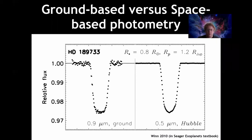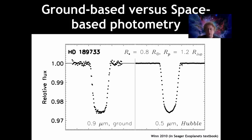If you observe a transit from space, you can get much nicer data. On the left plot, I'm showing the brightness of a star with a planet orbiting it, with data taken from the ground with a telescope in Arizona — you can clearly see the dip in brightness. But if you compare it to what you can get with the Hubble Space Telescope in space, there's basically no noise in the data set. This means we can find smaller dips in brightness, and therefore smaller and smaller planets — not just giant planets the size of Jupiter, but smaller planets the size of Earth.